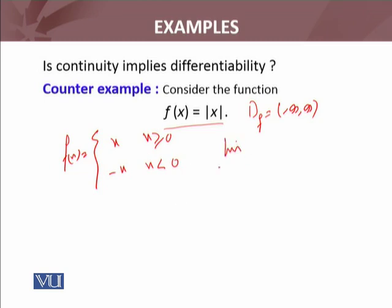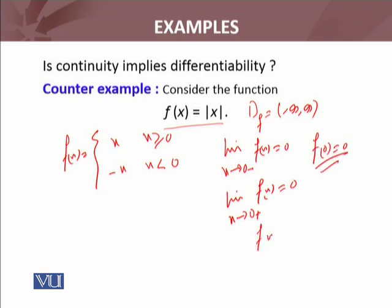Limit as x approaches 0 from the left side, f(x) equals 0. Limit as x approaches 0 from the right side, f(x) also equals 0. The function value f(0) is also 0. So f is continuous at x equals 0.